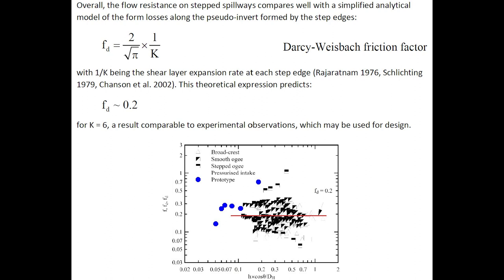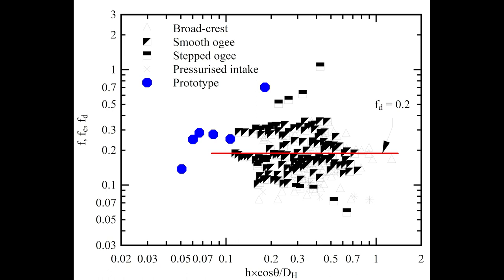Overall, the flow resistance on step spillways compares well with a simplified analytical model of the form losses along the pseudo-invert formed by the step edges, where the term 1/k is the shear layer expansion rate at each step edge. The theoretical expression leads to a dimensionless boundary shear stress of 0.2, a result comparable to experimental observations, which may be used for design, and is shown on this graph compared to the data.